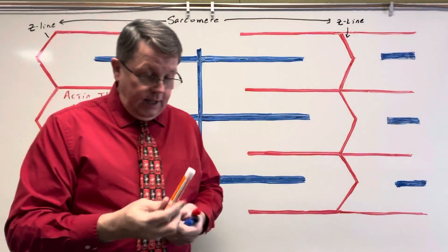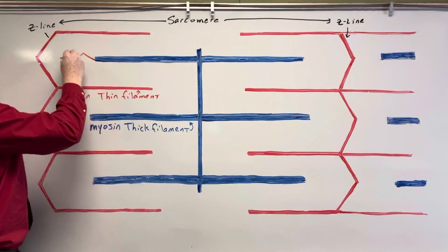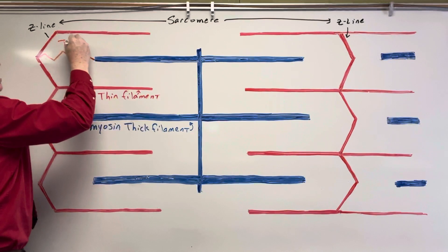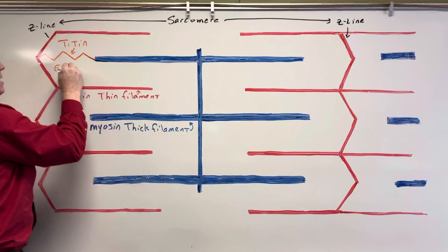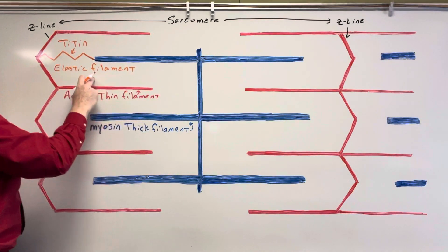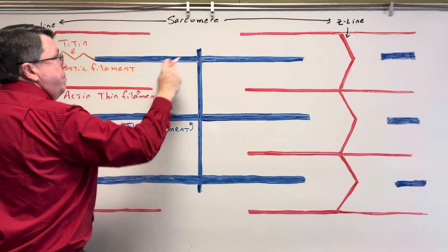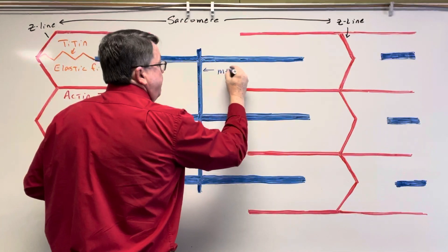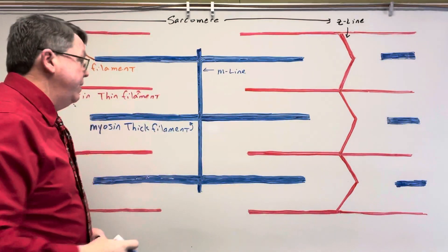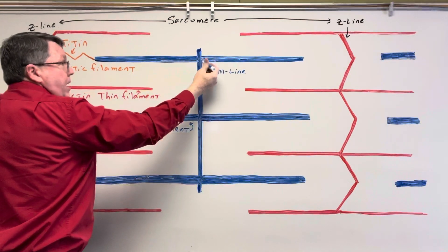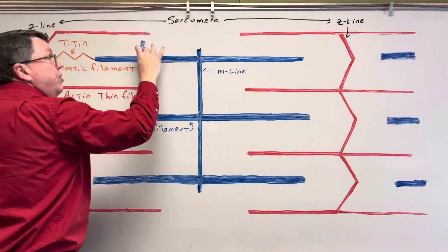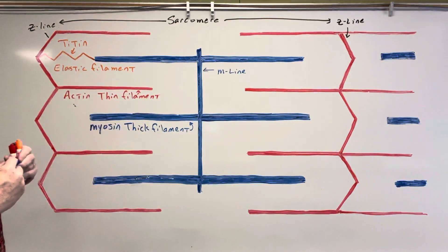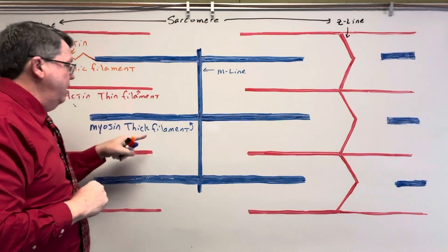There's one other filament that a lot of books don't mention. It actually attaches the myosin to the Z-line, and this is going to be called titin — also known as the elastic filament. The role it plays is it goes right through the myosin and connects to the line coming down the middle, which we call the M-line. It's called the M-line because it's right in the middle. The elastic filament holds the myosin in place between the two actin and also prevents the sarcomere from overstretching.